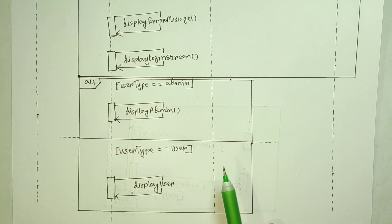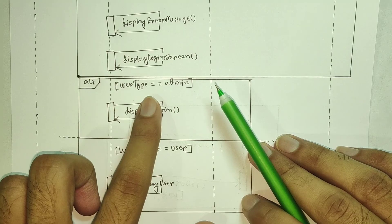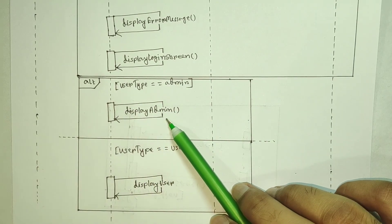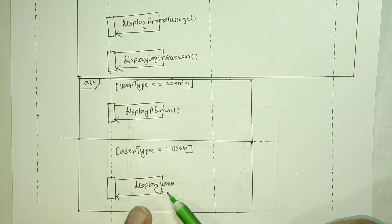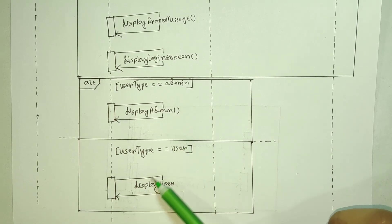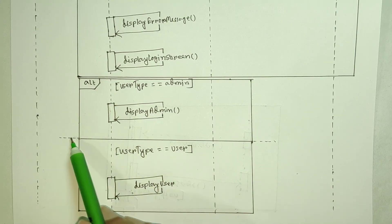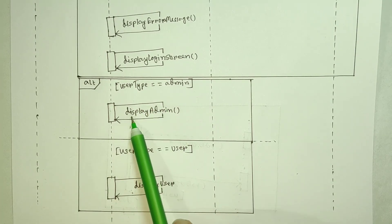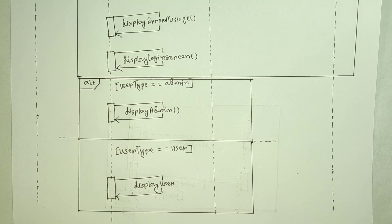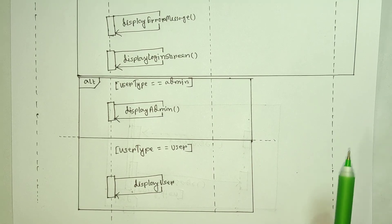This is the login — there are two types of login: admin or user. This is the alternative. The user type determines the admin or the user. The dotted line separates the alternatives. If you click on admin or user — if you are admin, the admin panel is shown. This is the alternative key using ALT.